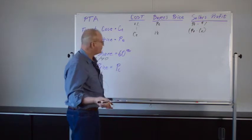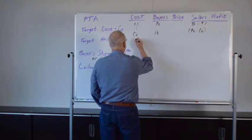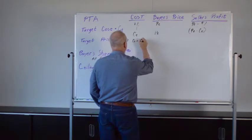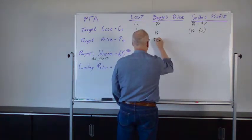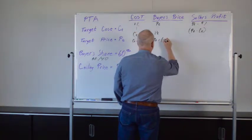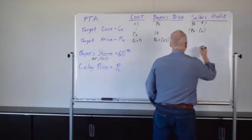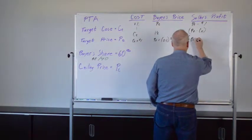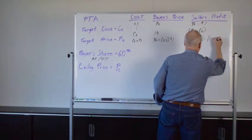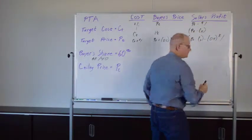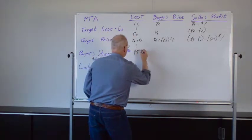The very next dollar of cost, we're going to start this cost sharing. So with C sub T plus one dollar, the buyer's price is going to be P sub T plus 60% of that dollar. And the seller's profit is going to be P sub T minus C sub T minus 40% of that dollar. And this continues up until we get to the PTA.